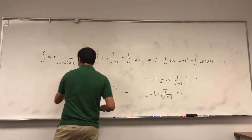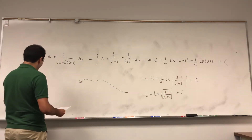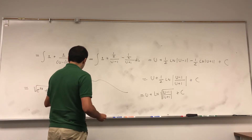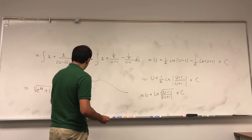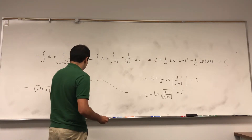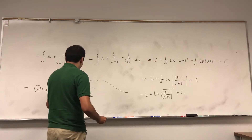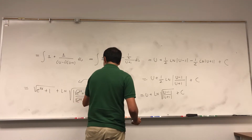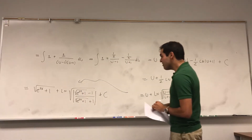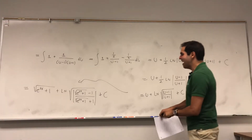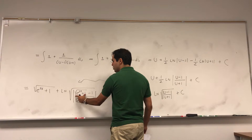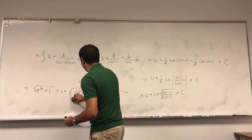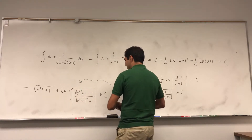U was the whole thing — the whole shebang. And we're left with square root of e to the 2x plus 1 plus ln of the absolute value of square root of e to the 2x plus 1 minus 1 over square root of e to the 2x plus 1 plus 1, plus a constant. And let's see — can we remove the absolute value? Indeed we can, because this is positive: the whole thing is greater than 1, so this minus 1 is still positive. So in fact we can remove it.